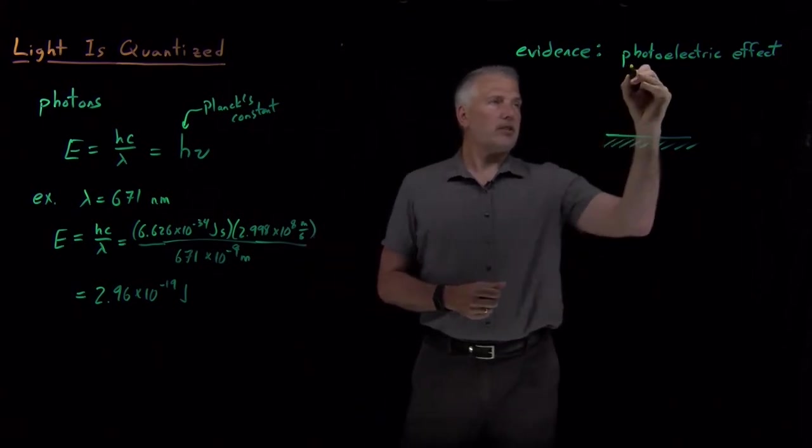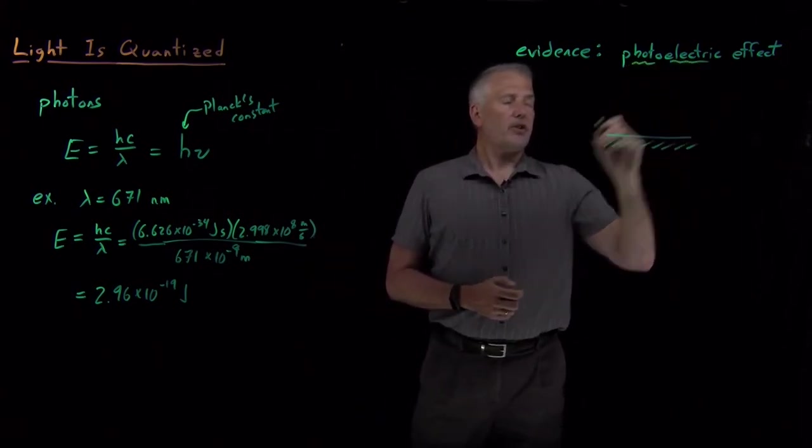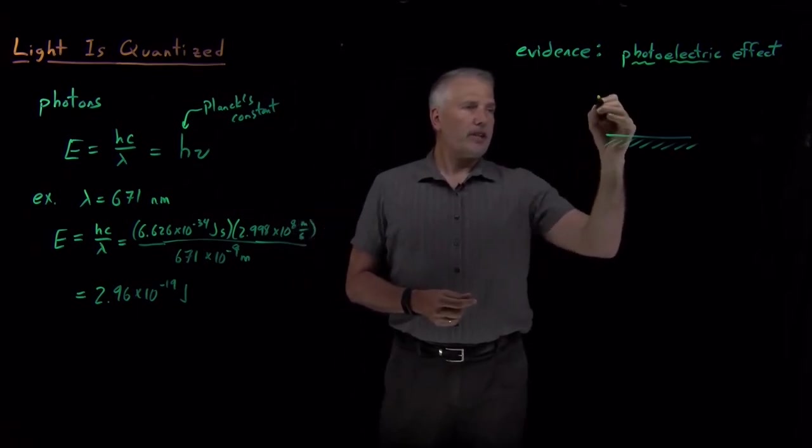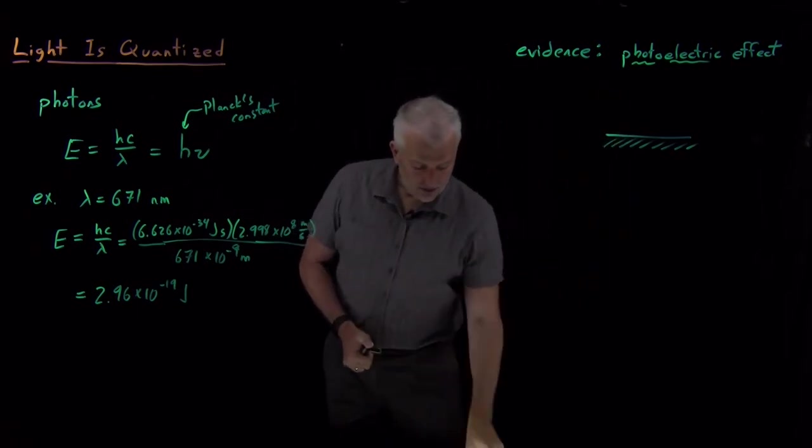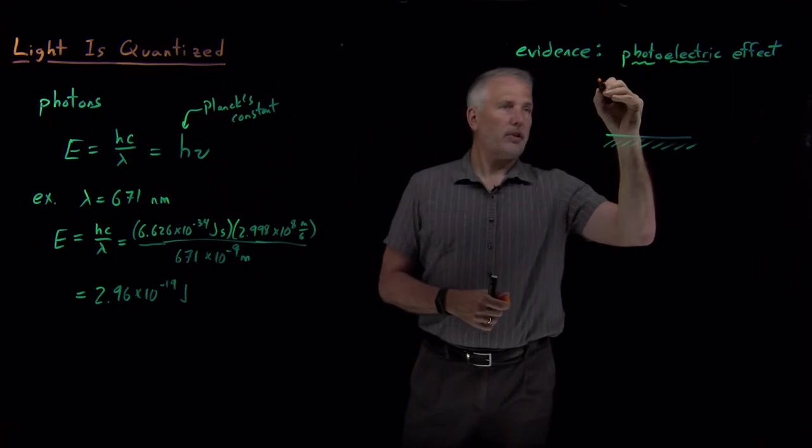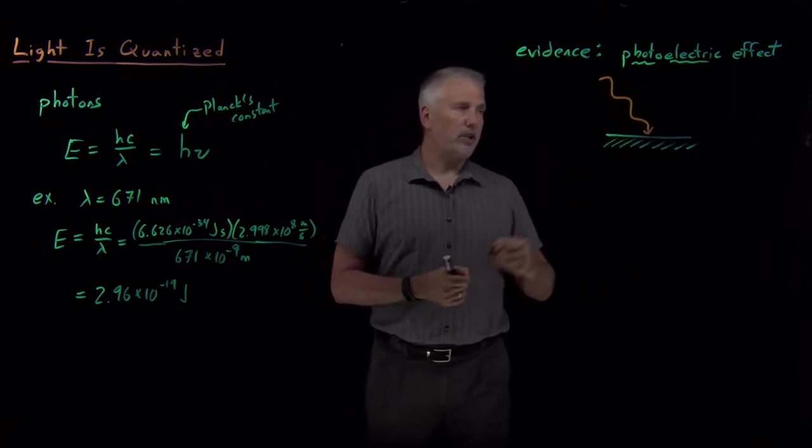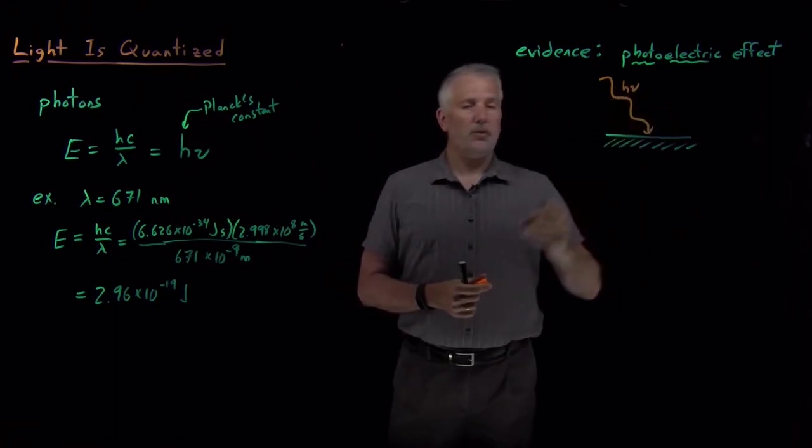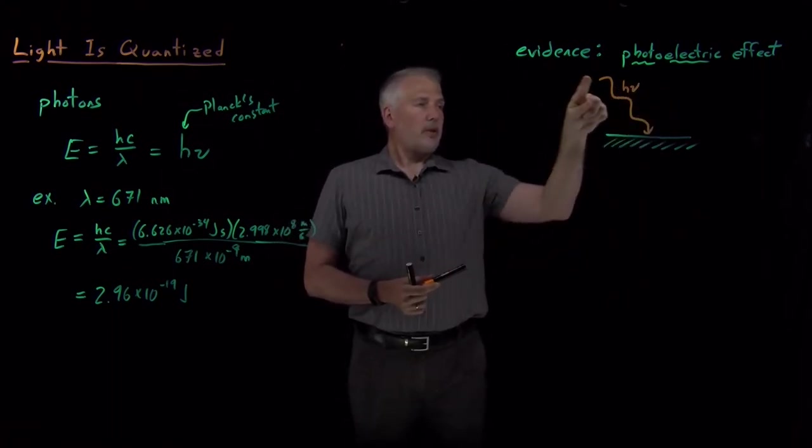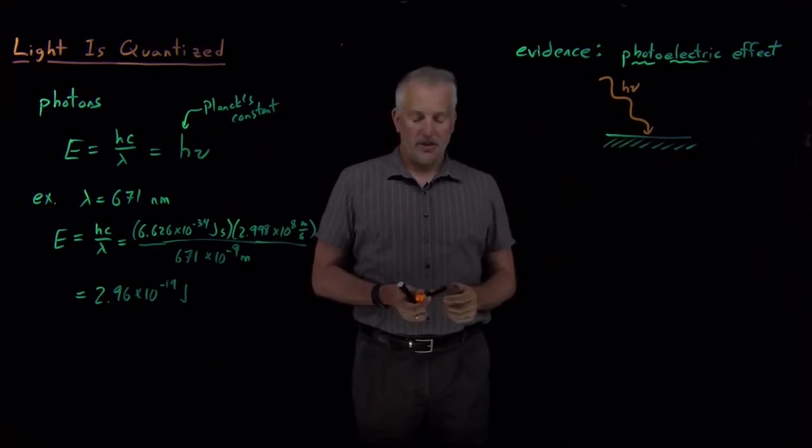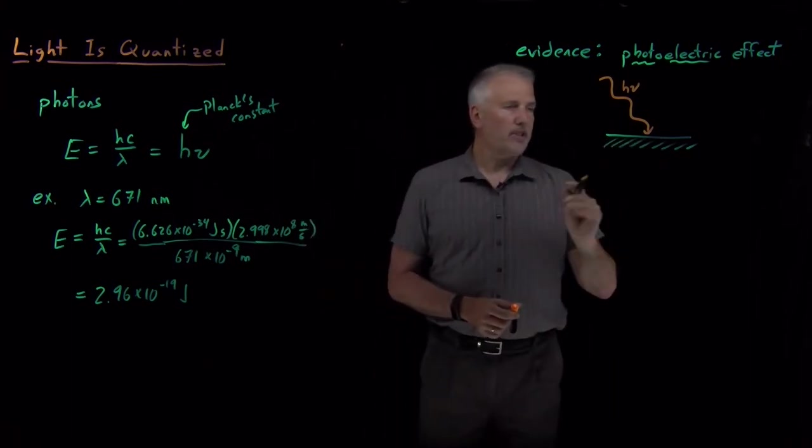And the name tells us photo, meaning light, and electric, meaning electricity or electrons. So what the photoelectric effect is, is if I shine light of a particular frequency or wavelength, so here's a light beam composed of a bunch of photons, so here's some h nu light of some particular frequency hitting a surface, usually a metal surface, although it could be any surface.